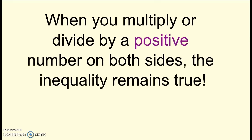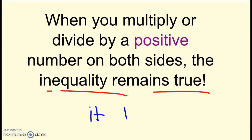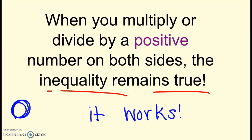Here's your first big idea — write this down on your paper. When you multiply or divide by a positive number on both sides, like we just did in those six examples, the inequality remains true. Basically, it works. You can do it just like we did with equations — don't have to change anything. Just make sure your variable is still written on the left-hand side and you'll be good.